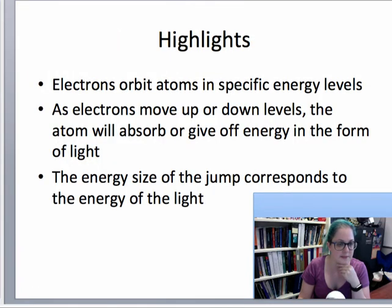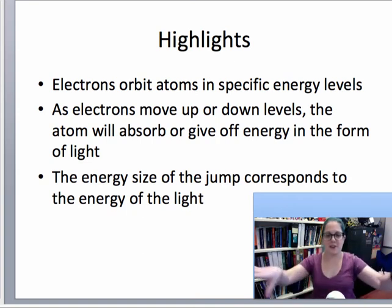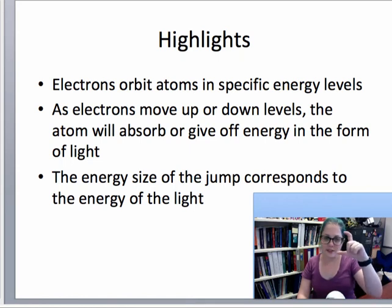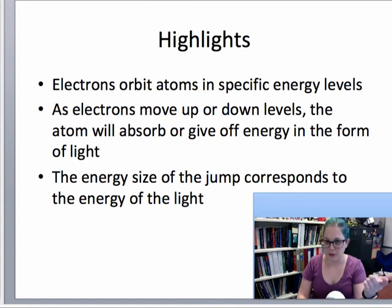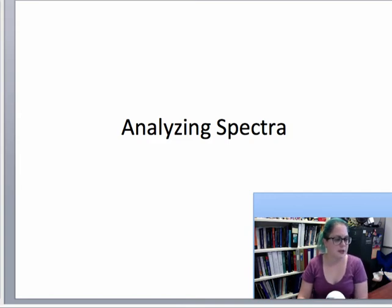So the highlights of this is that electrons orbit atoms in specific energy levels. As electrons move up and down levels, the atom will absorb or give off energy in the form of light, and the size of that energy jump corresponds to the energy or wavelength or frequency of that light. So how do we use that light to analyze spectra? We've got a couple things going on. We've got this thermal continuum, we've got these spectral lines, we've got all kinds of funky stuff. We want to use all that information together to figure out some properties about the star, but we don't want to get confused between them.